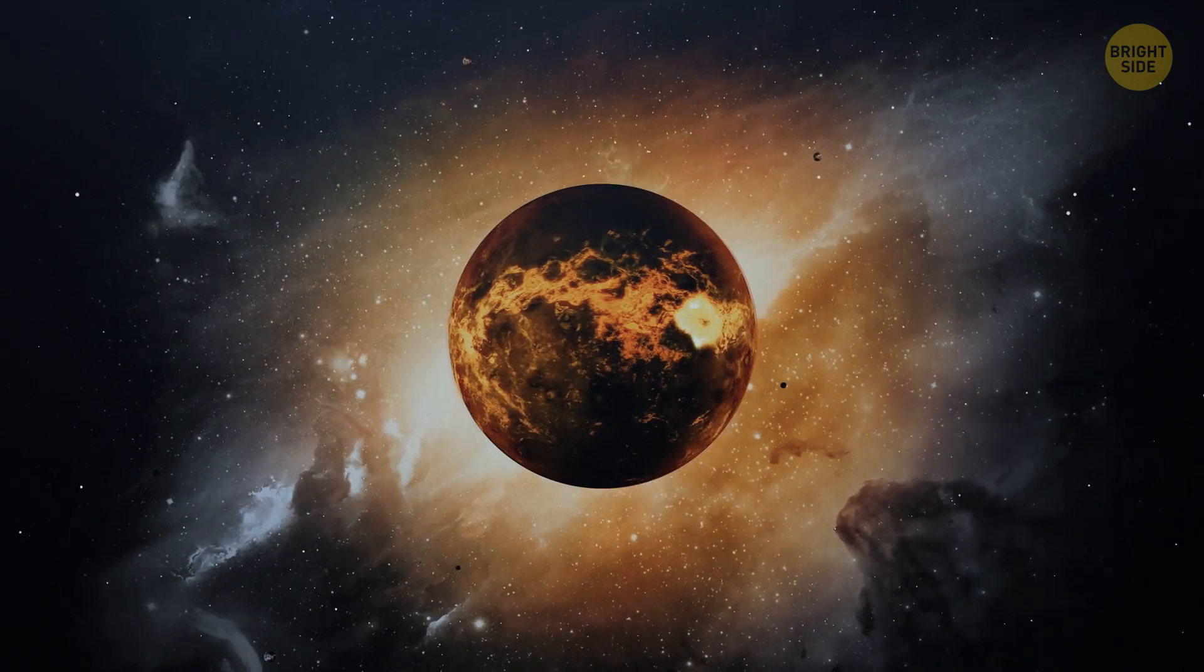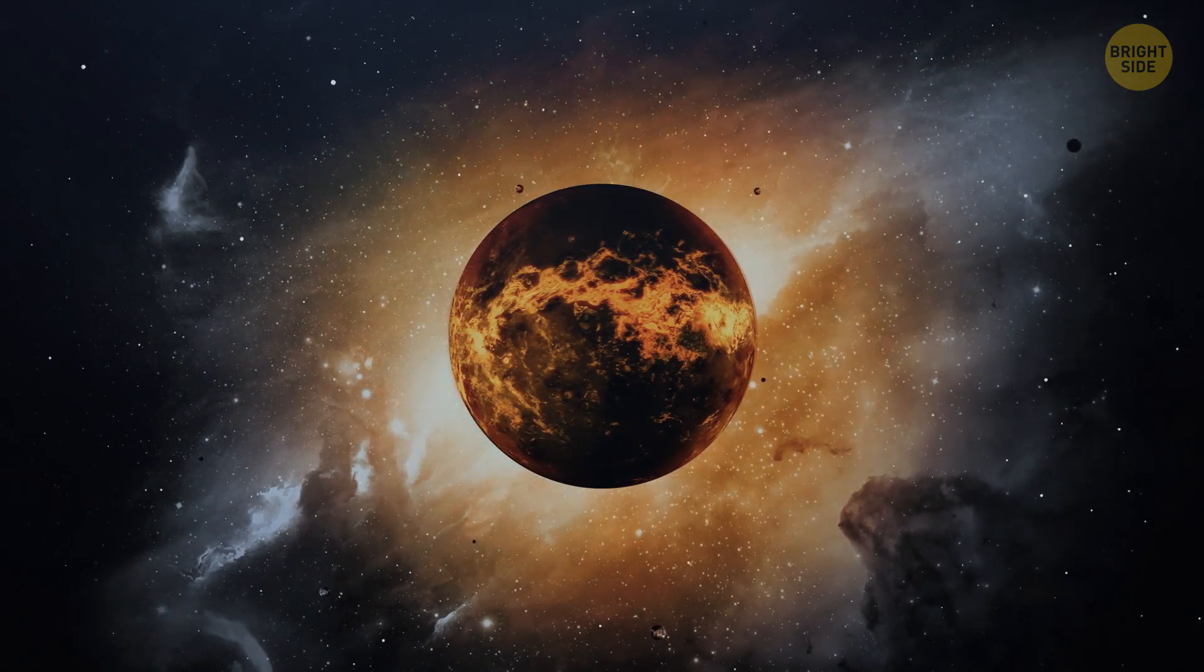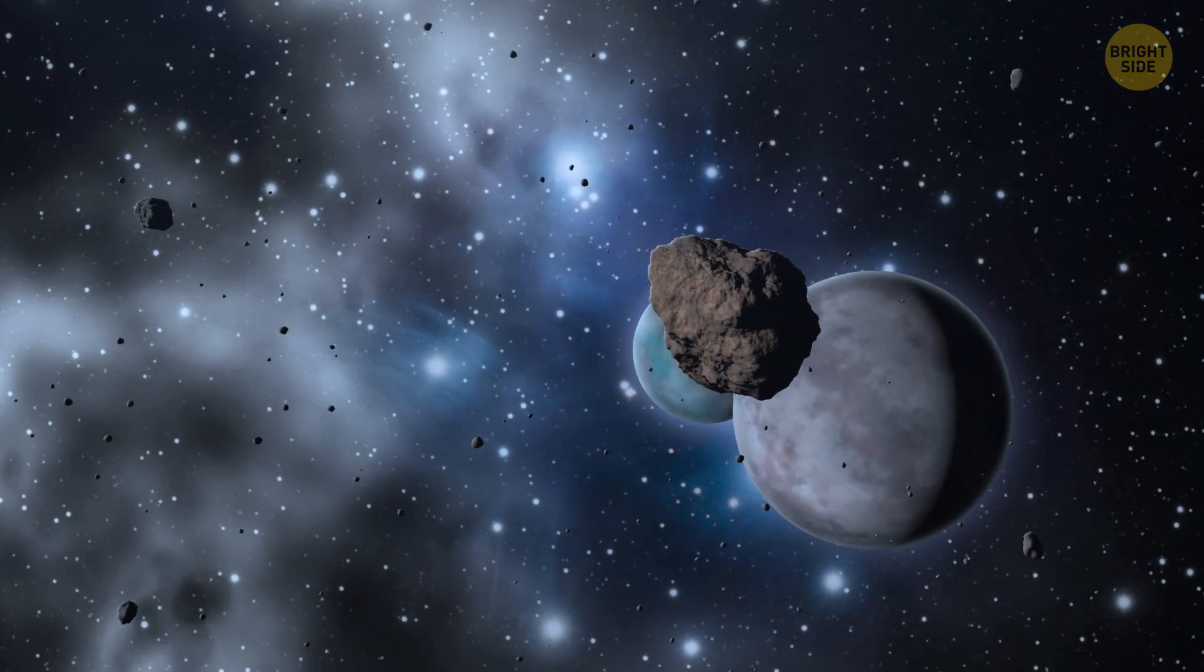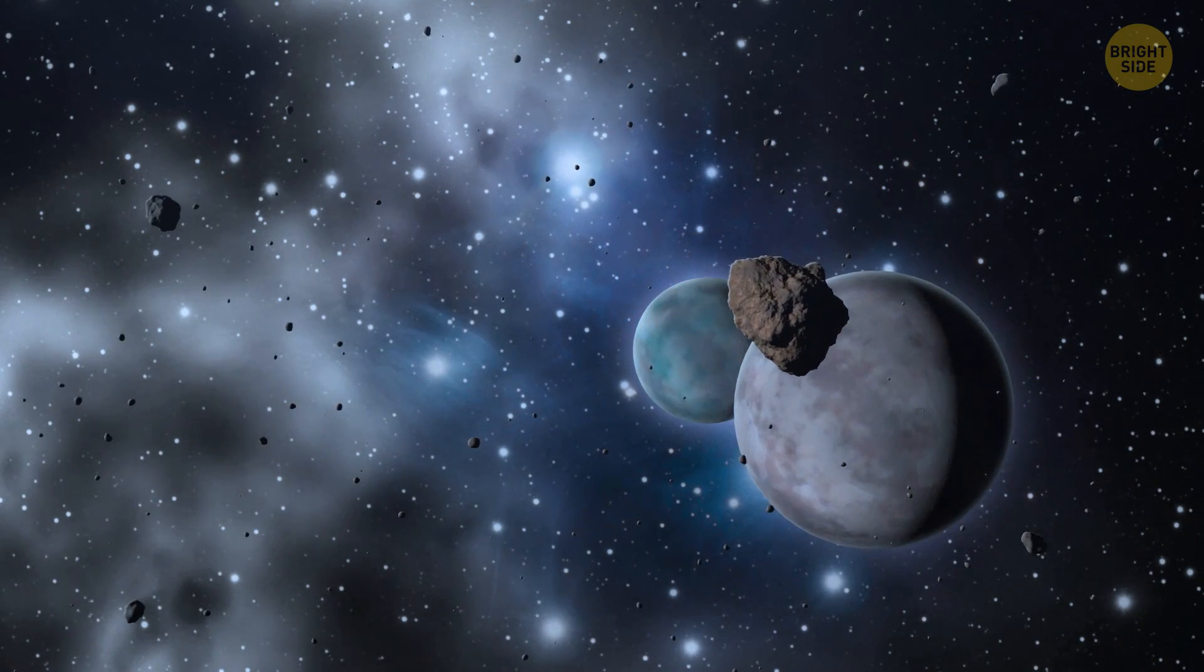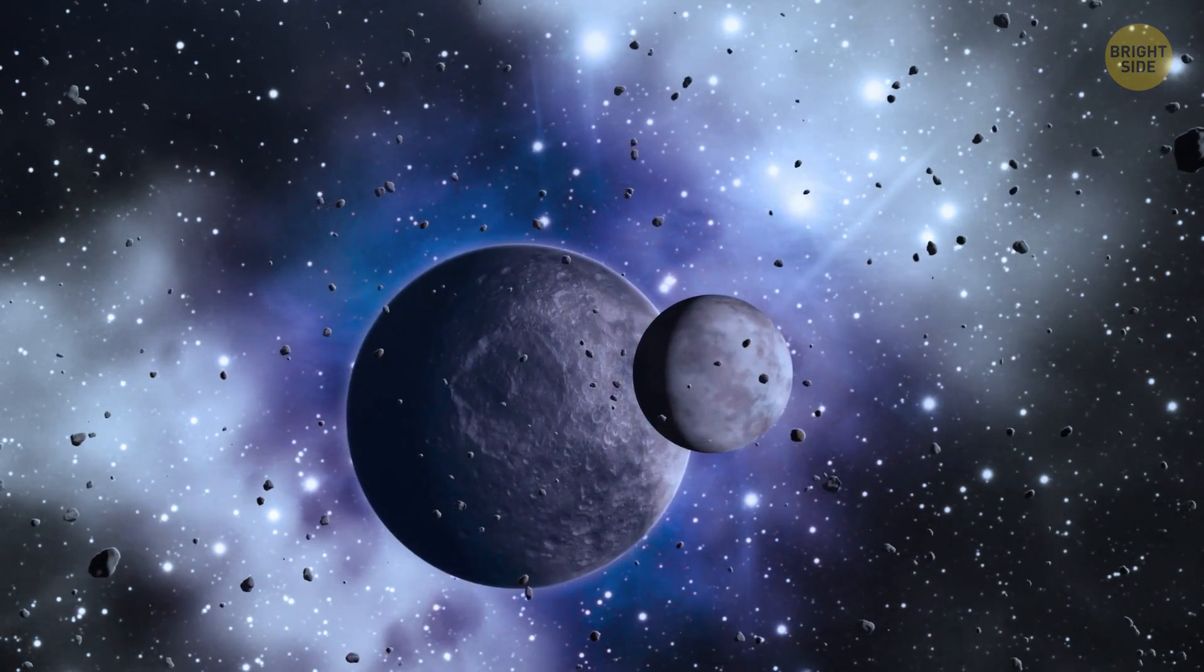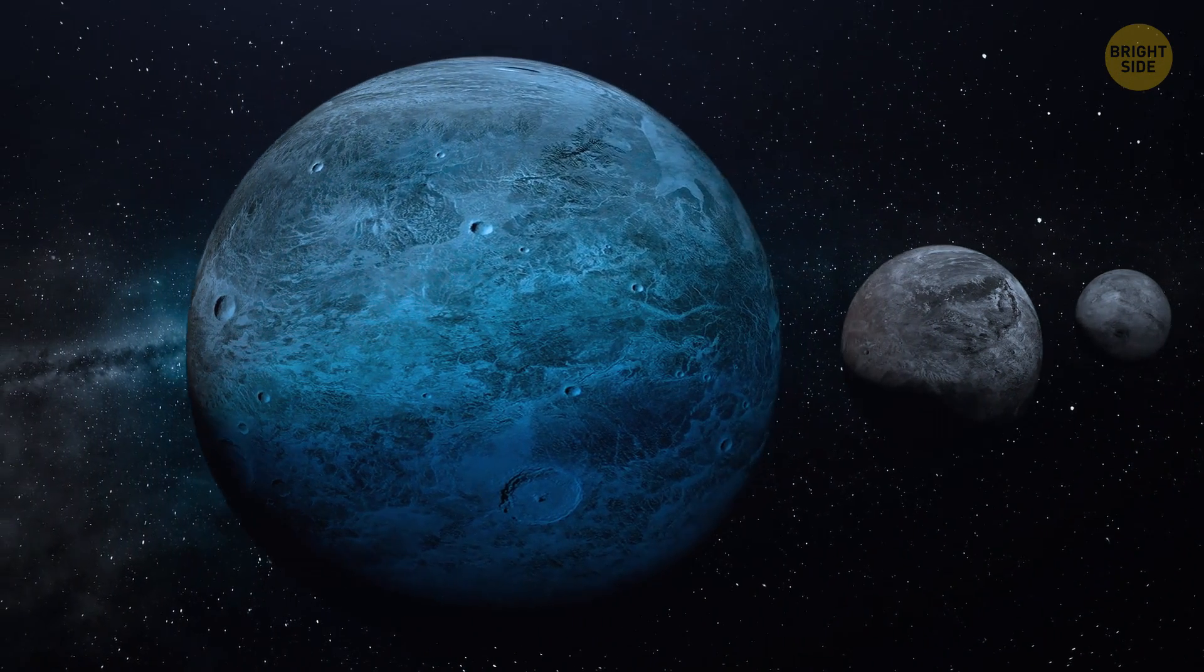At the same time, a huge cloud of debris blooms above the molten planet. All that material will eventually clump together to create new moons. Often, it creates one large satellite that orbits close to the fused world, and a few smaller ones that circle much farther out.